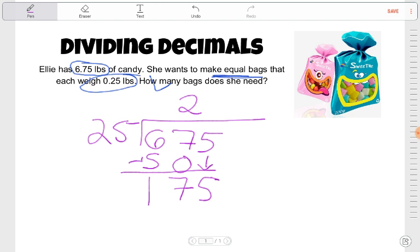Now how many times does 25 go into 175? That might be something that you need to do on some scratch paper. I'm going to say I know 25 times 5. Let's try that. That brings me to 125. I'm still 50 away. I know 25 times 2 is 50, so our answer is going to be not 5, but we'll add 2.